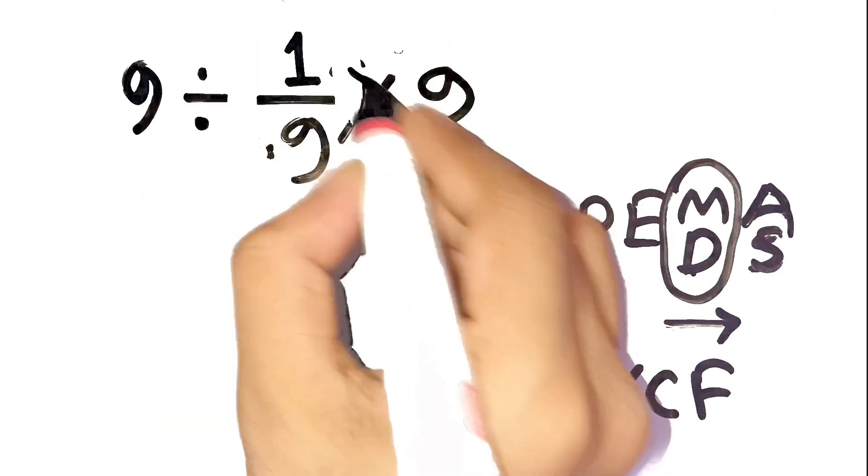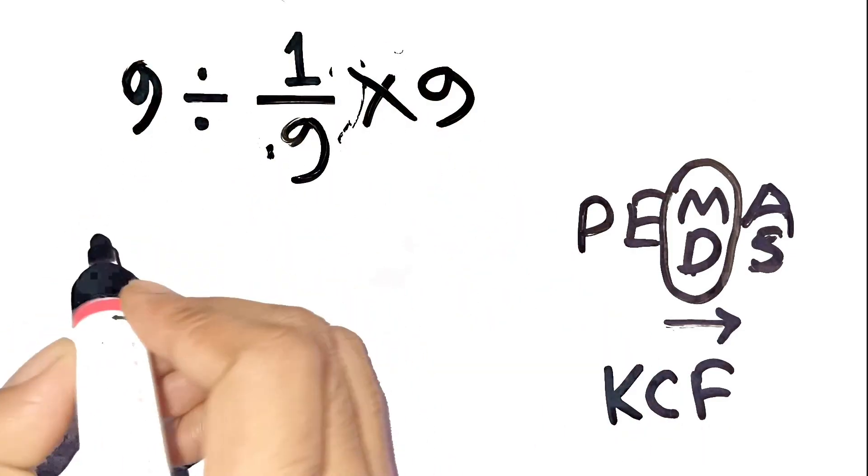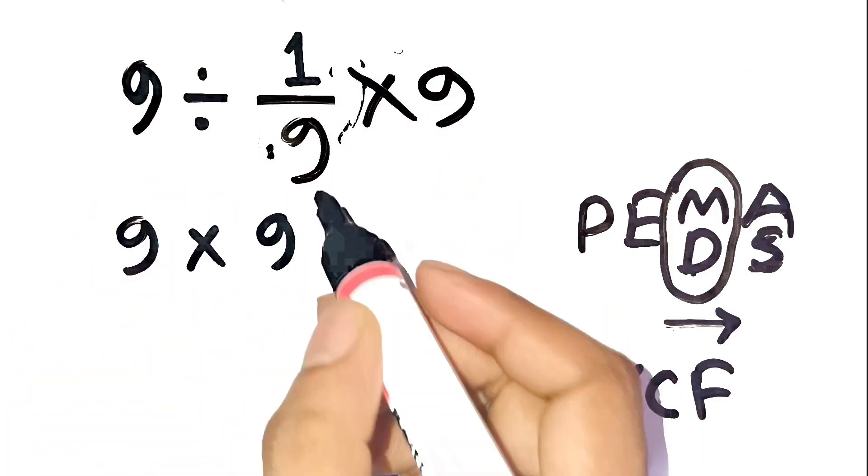Start with 9 divided by 1 ninth. Keep-change-flip turns this into 9 times 9, which equals 81.